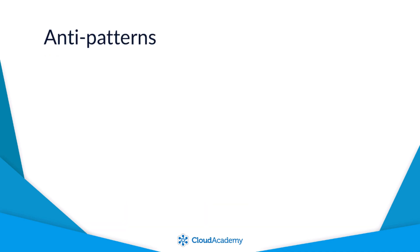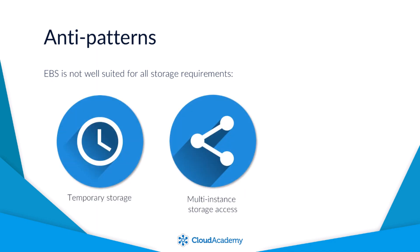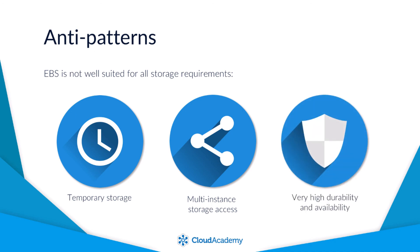EBS offers a number of benefits over EC2 instance store volumes, but EBS is not well suited for all storage requirements. For example, if you only needed temporary storage or multi-instance storage access, then EBS is not recommended, as EBS volumes can only be accessed by one instance at a time. Also, if you needed very high durability and availability of data storage, then you would be better suited to use Amazon S3 or EFS, the Elastic File System.